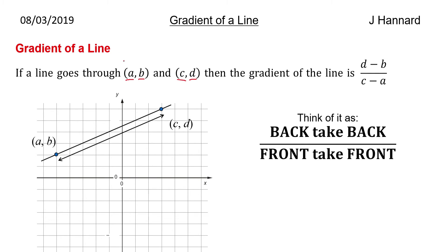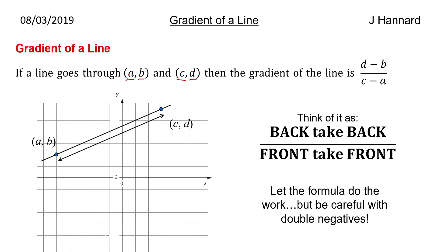It doesn't matter which way around you do that, as long as you're consistent. If you start with this coordinate and take away this one, you'll get exactly the same answer as the other way around. Let the formula do the work and be very careful of those pesky double negatives.